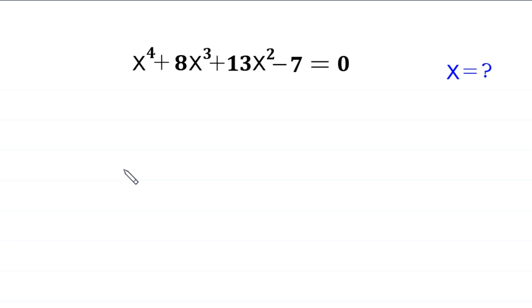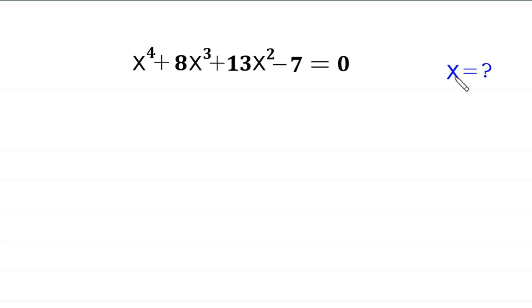Hello everyone, you are welcome to how to solve this very nice quartic equation: x to the power 4 plus 8x cubed plus 13x squared minus 7 is equal to 0. Our job is to find all possible values of x. So let's start.